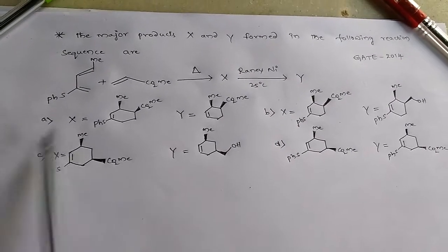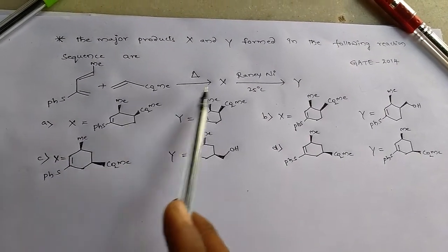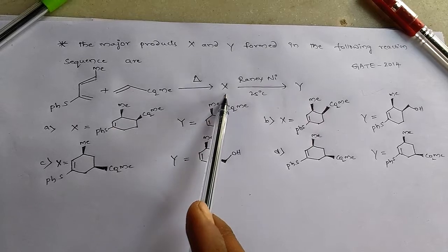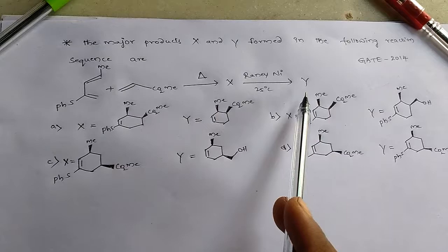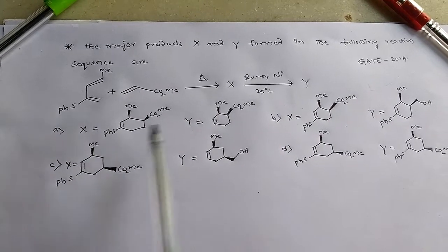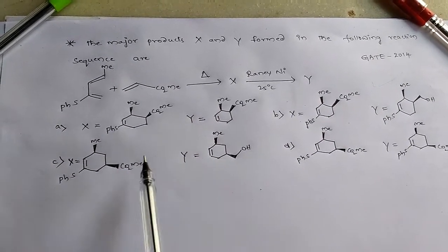So we have two reactants and on heating the product is X, and further on Raney nickel at 25 degree centigrade we get Y. So what should be X and Y? We have four options.